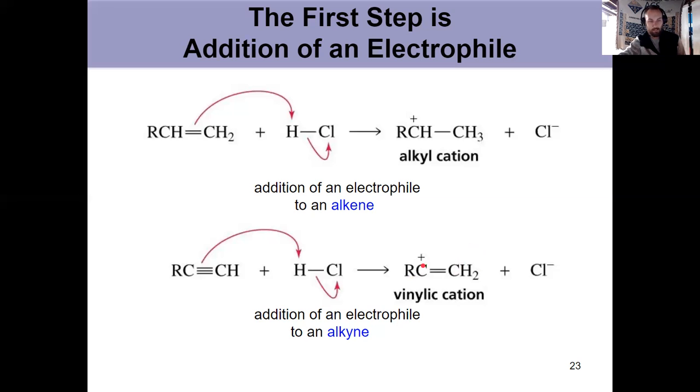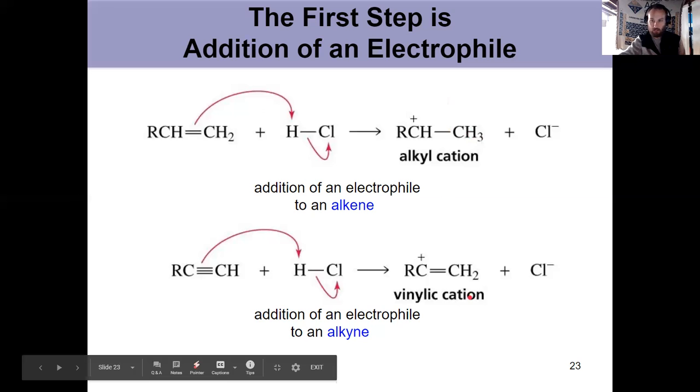A vinylic cation here is less stable than a similarly substituted alkyl cation. I've got a positive charge on an sp hybridized carbon. sp is more electronegative than sp2 or sp3. That means this is more electronegative and yet has a positive charge, and therefore these vinylic cations are less stable.